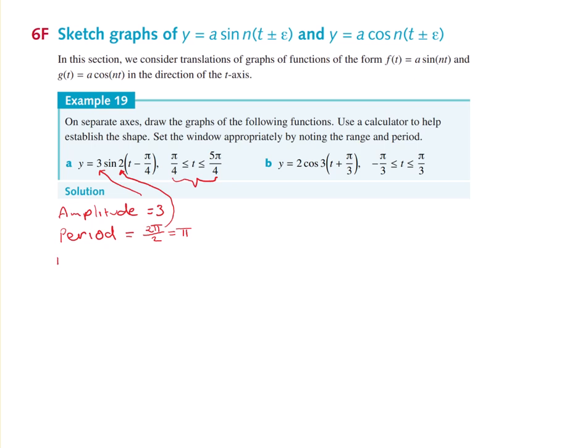And we have a translation, or another word they use in trig, is a phase shift. Translation or phase shift. And that's just how far left or right the graph moves, and it moves π/4.